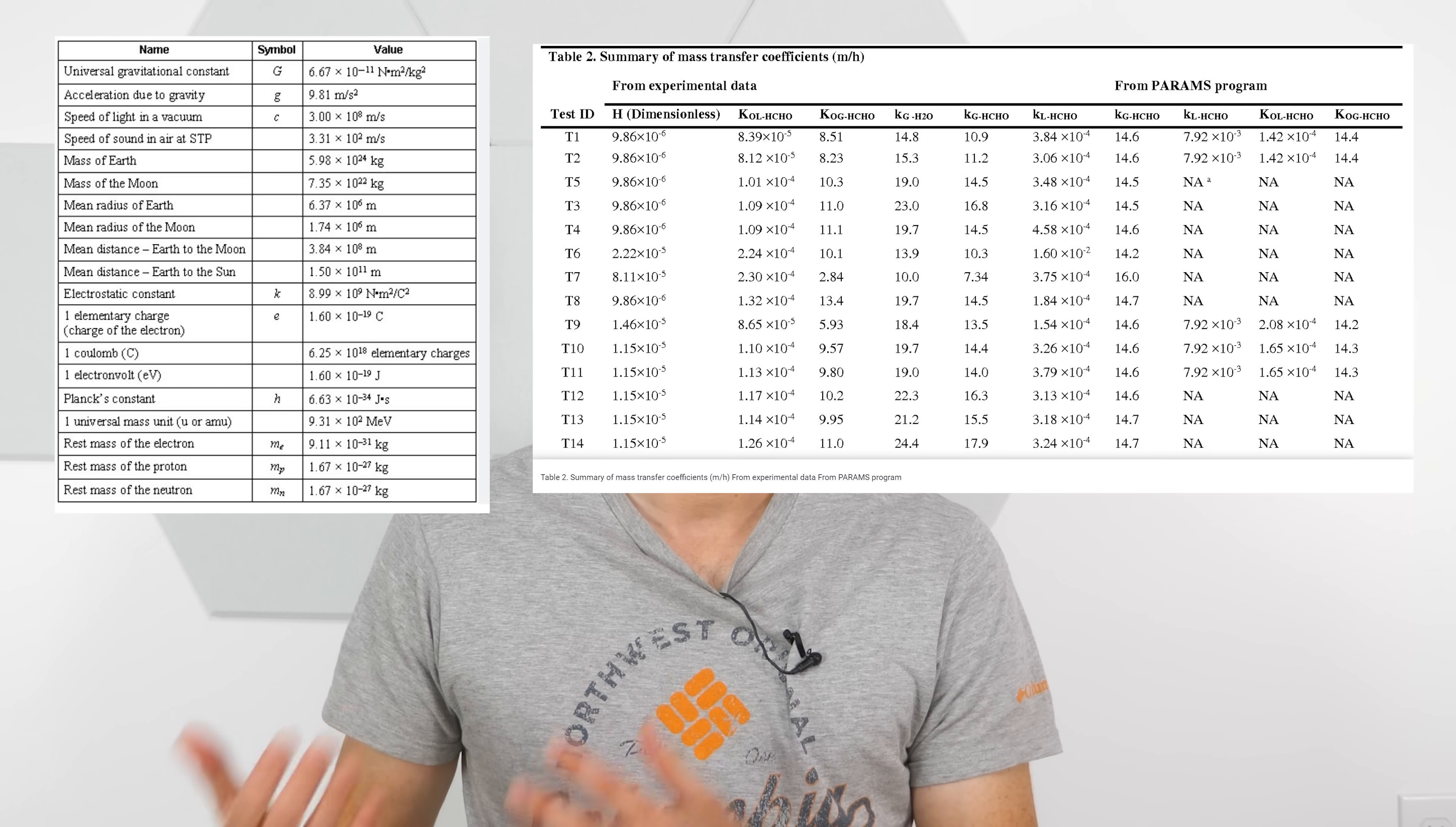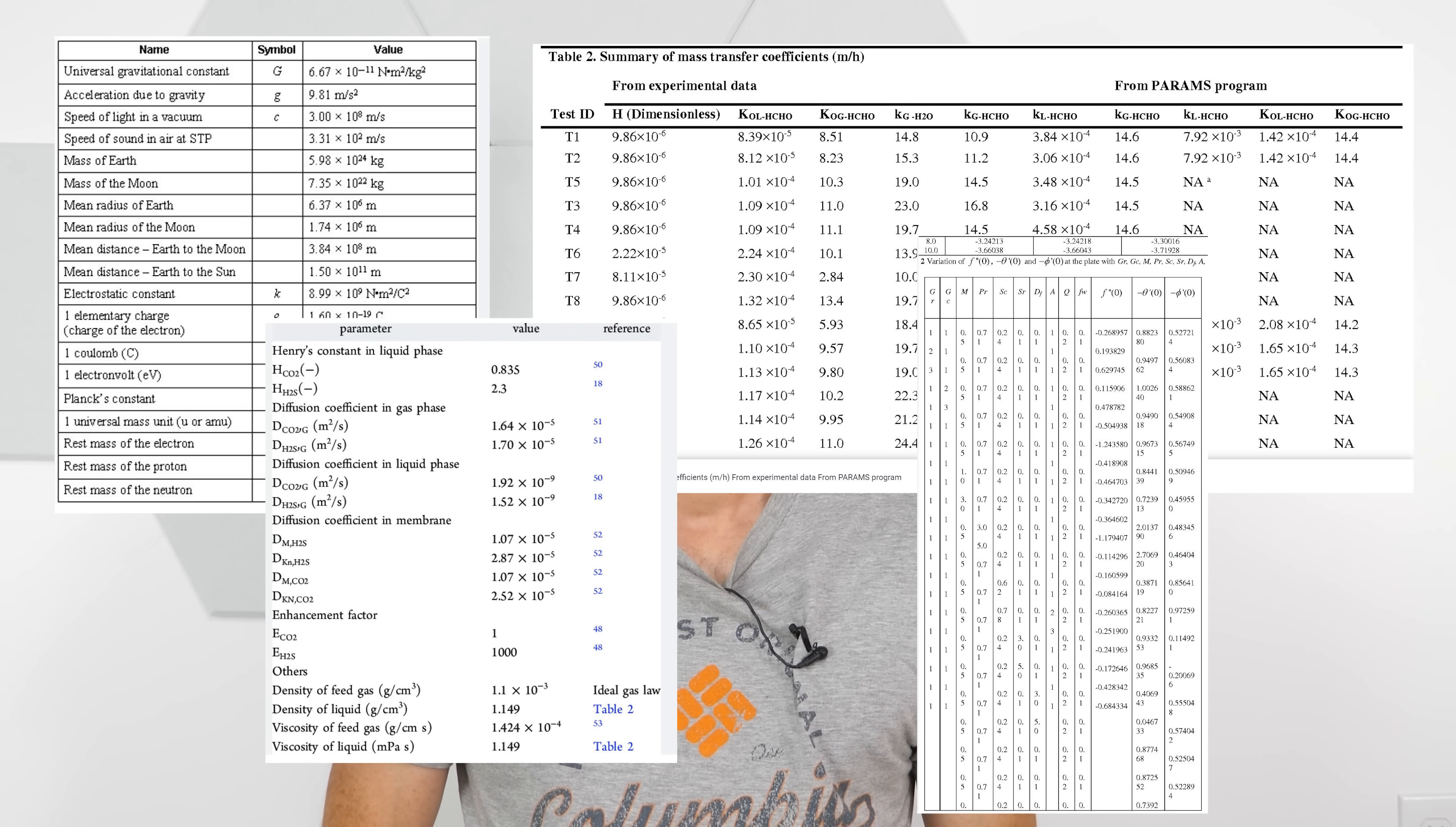There are thousands of constants that we work with all the time in science, but there are only a few that we call fundamental constants. These are constants that are applicable to any system anywhere in the universe. They aren't some arbitrarily defined constant to solve a specific equation.